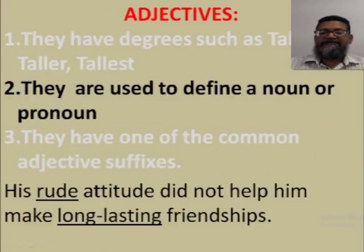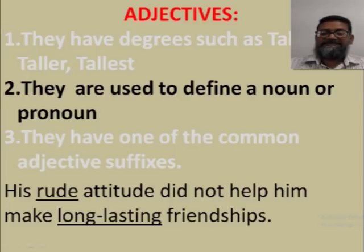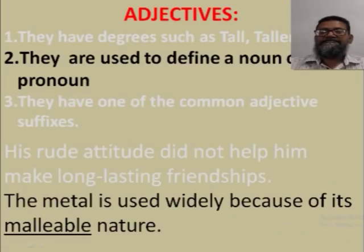Second, adjectives are used to define a noun. 'His rude attitude didn't help him.' Rude is telling us about the attitude — what type of attitude? Rude. Since attitude is a noun, rude must be an adjective. 'It didn't help him make long-lasting relationships.' Long-lasting is defining relationships, a noun — so it's an adjective. 'Metal is used widely because of its malleable nature.' Malleable defines nature, a noun — so malleable is an adjective.